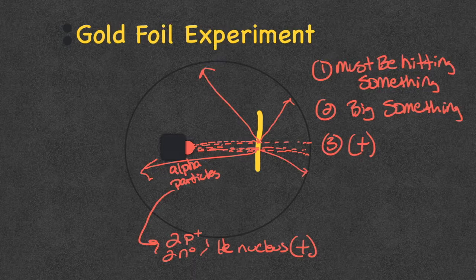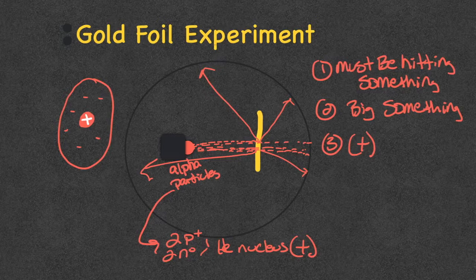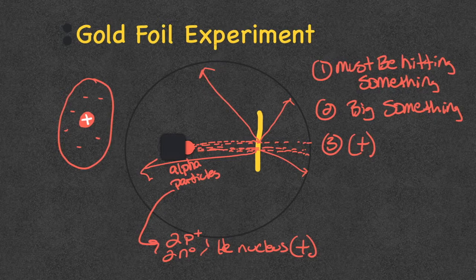So he decided that gold atoms must have a dense nucleus in the center. If there's a dense positive nucleus, then basically the atom is just a lot of empty space. The negatives reside in this empty space, and the nucleus is this big dense positive center. He realized the atom was mostly empty space because of all those alpha particles that just went straight through.